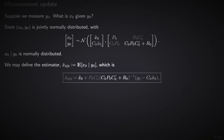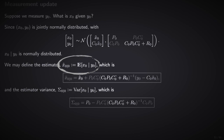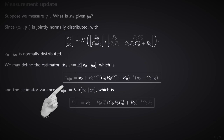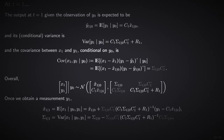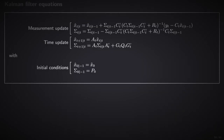Therefore, we can estimate x0 given y0 by taking the conditional expectation of x0 given y0. This is the measurement update at time 0. We then use the time update to predict the expectation and variance-covariance matrix of x1. At time 1, once y1 becomes available, we estimate x1 given y1. This is the measurement update at time 1. We proceed by interleaving measurement and time update steps. This is the Kalman filter.